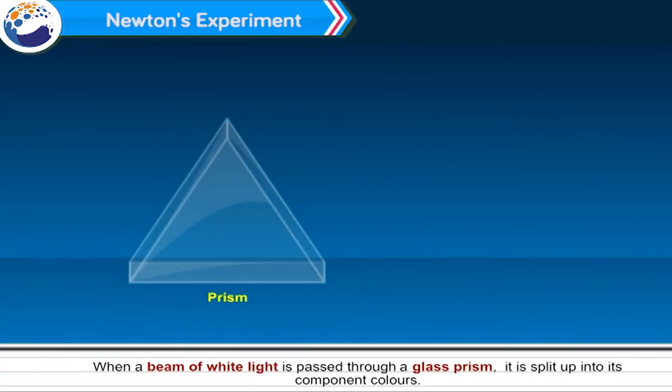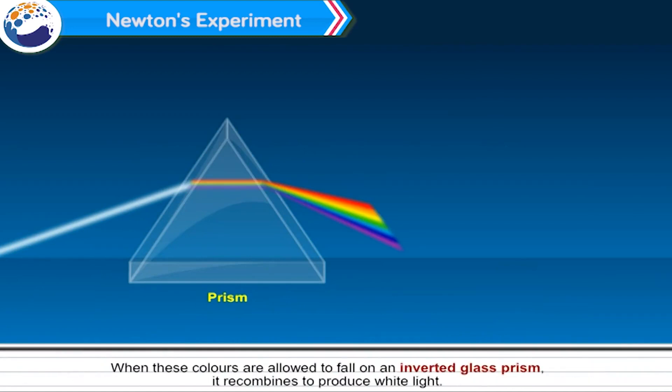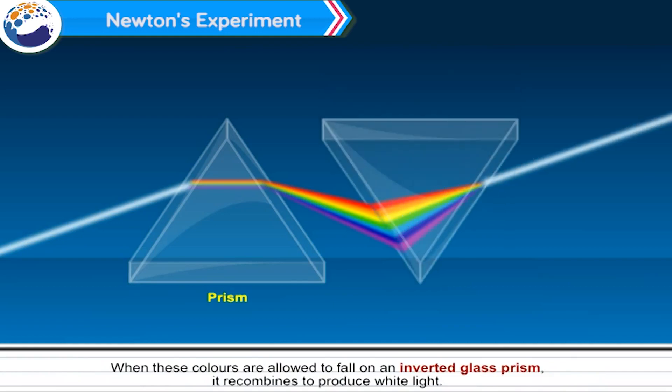Newton's experiment: When a beam of white light is passed through a glass prism, it is split up into its component colors. When these colors are then allowed to fall on an inverted glass prism, they recombine to produce white light.